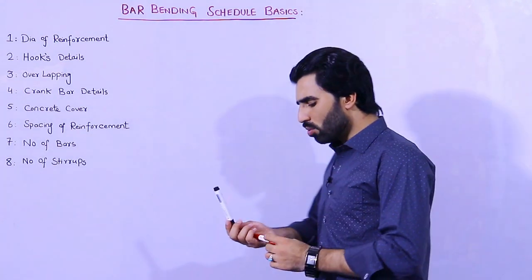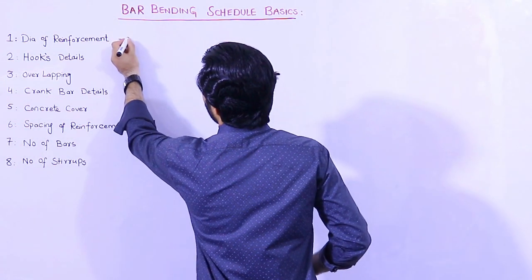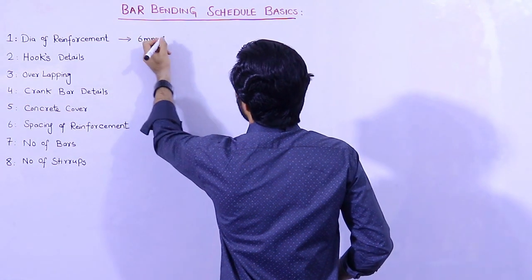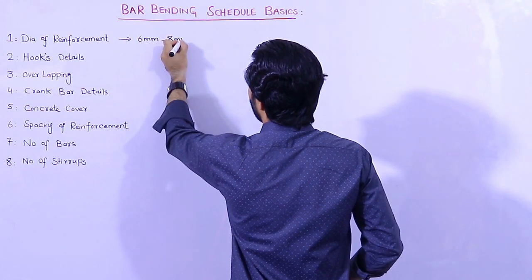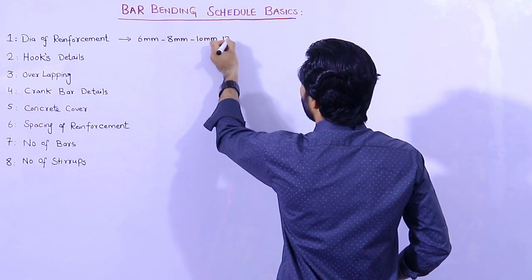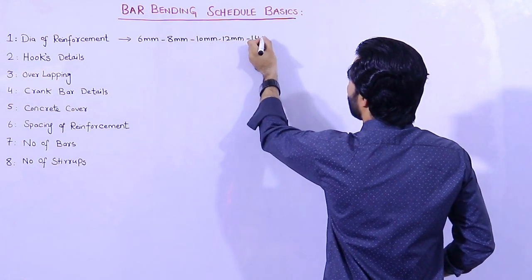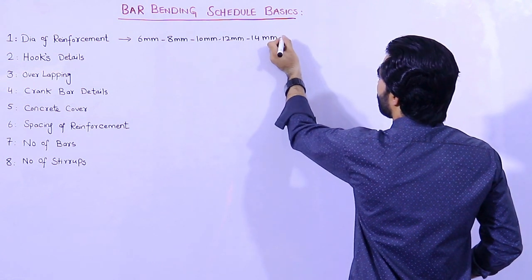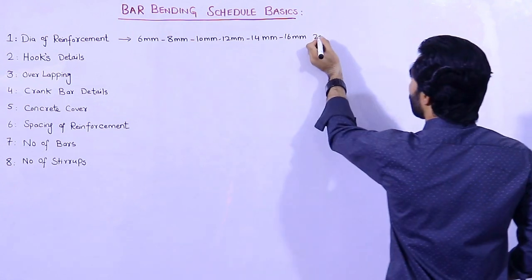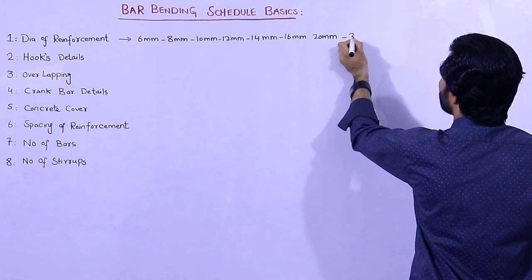The first one is diameter of reinforcement. As you know, we have different diameters for steel reinforcement in the market, starting from 6mm, 8mm, 10mm, 12mm, 14mm, 16mm, 20mm, and so on up to 36mm.